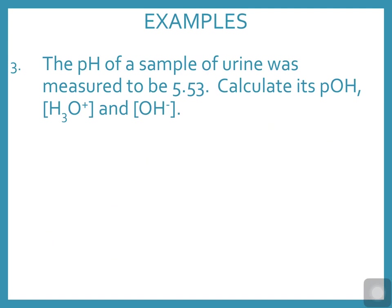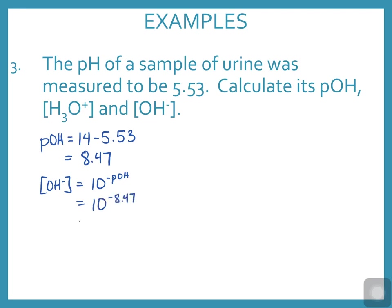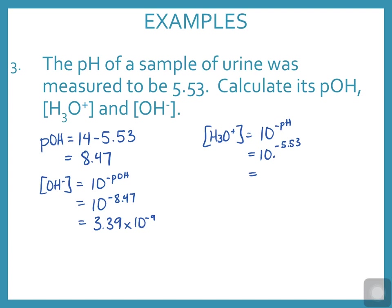Last question: the pH of a sample of urine is measured to be 5.53. Calculate the pOH, hydronium ion concentration, and hydroxide ion concentration. pOH equals 14 minus pH, which equals 8.47. From that, hydroxide ion concentration equals 10 to the negative 8.47, which is 3.39×10⁻⁹. The hydronium ion concentration equals 10 to the negative pH of 5.53, which equals 2.95×10⁻⁶.